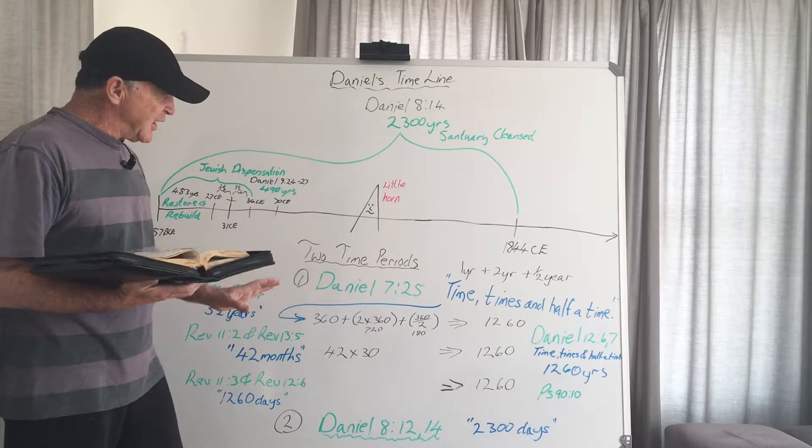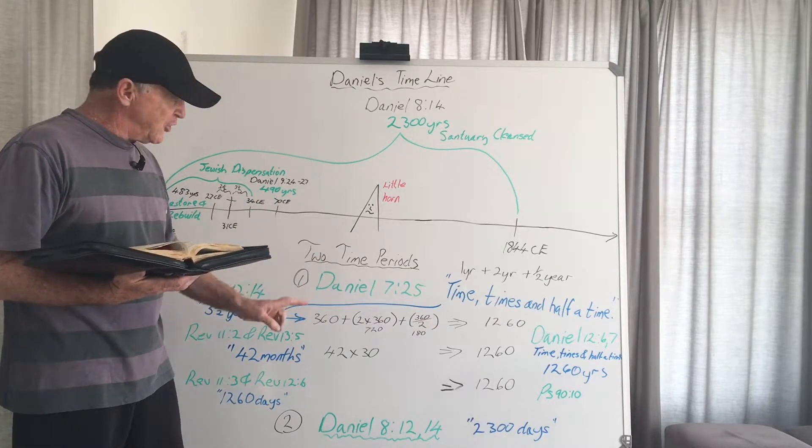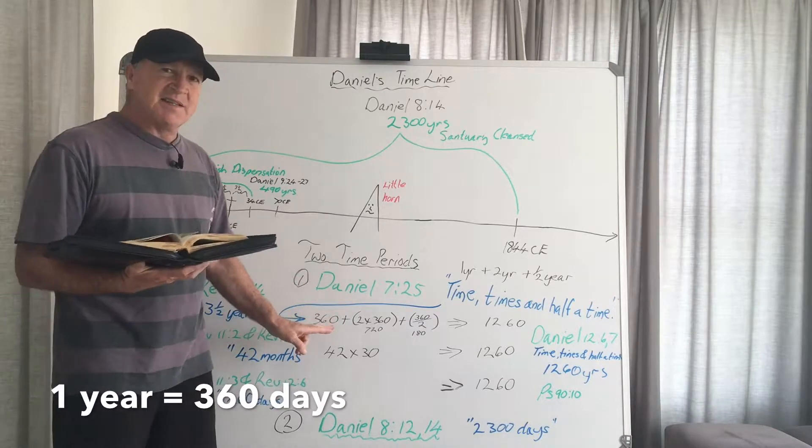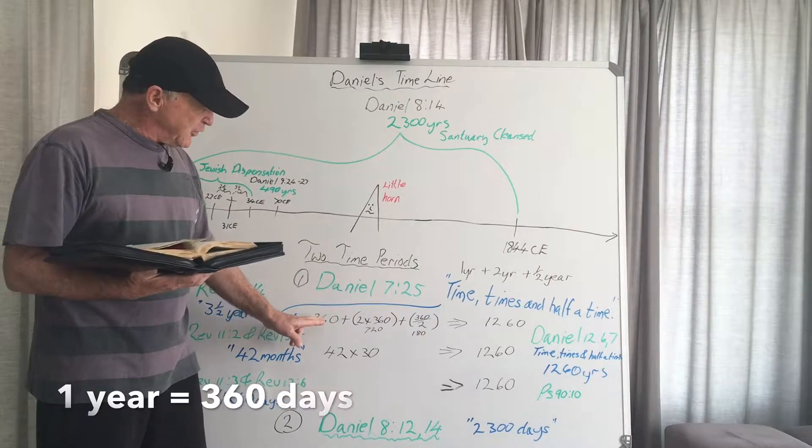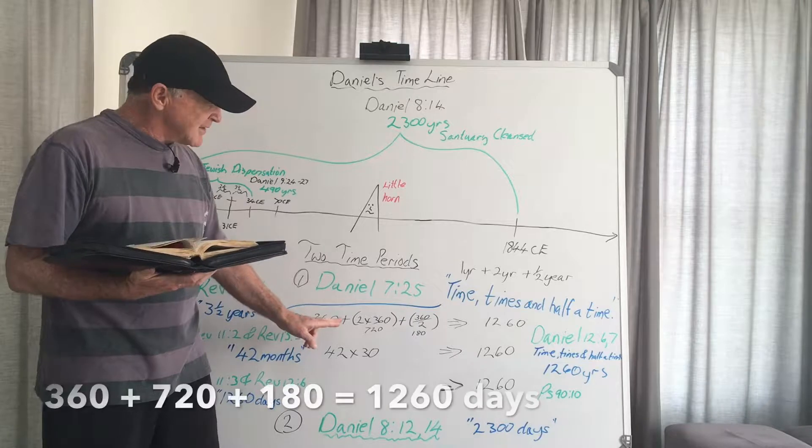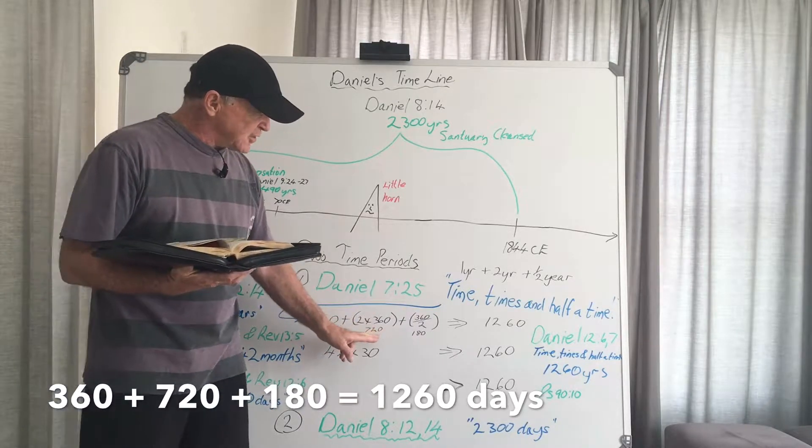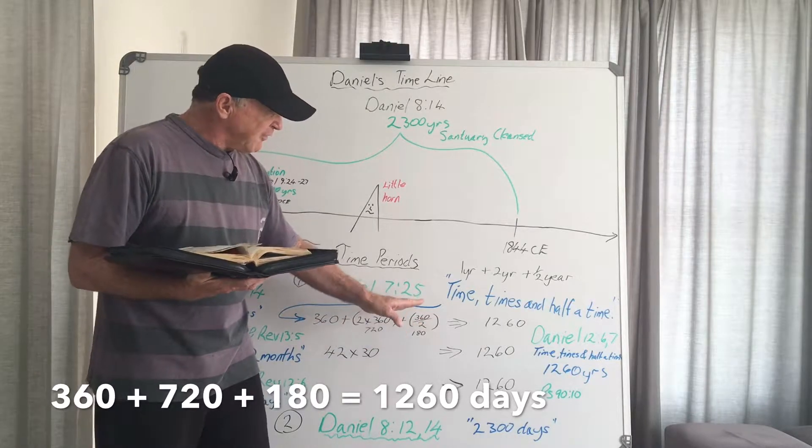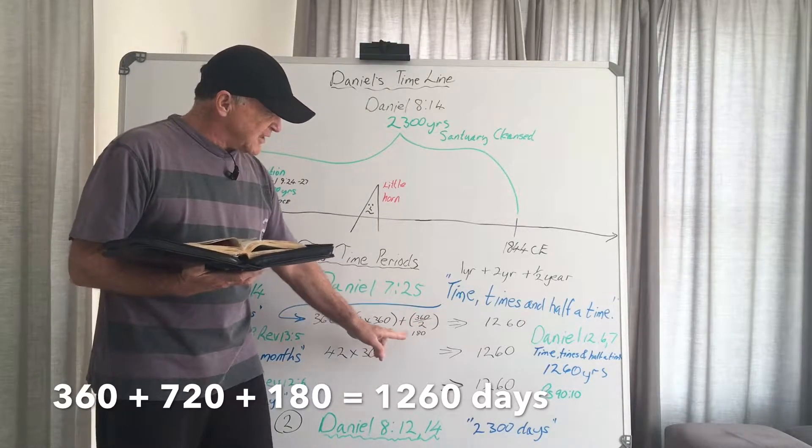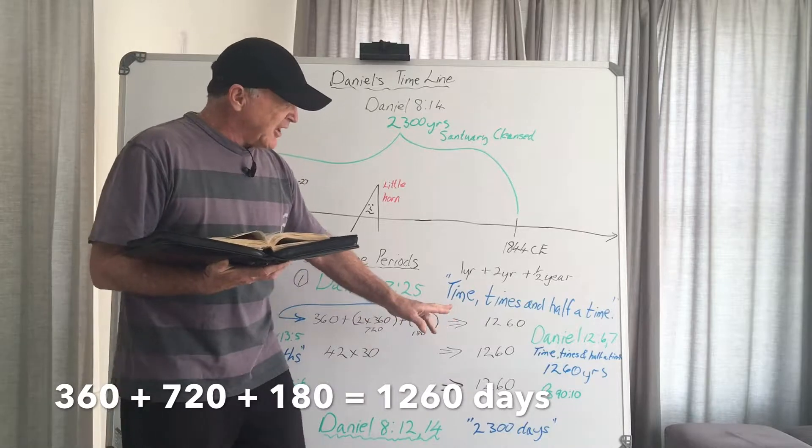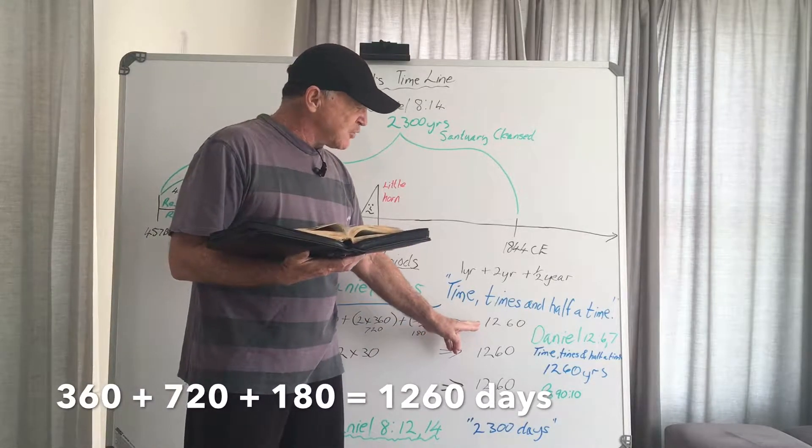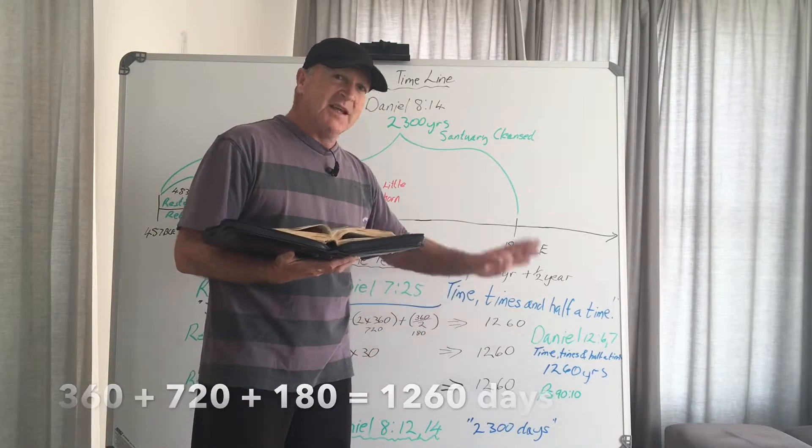In prophetic understanding, the period of time for a year is 360 days. So we have 360 days plus 2 times 360 days which is 720, plus we have half of 360 days which is 180, and you will find out that it gives us 1,260 days.